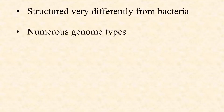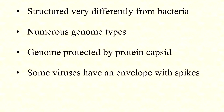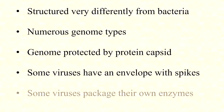Quick lesson summary: there's a very different structure between phage and human viruses. There are numerous genome types found in human viruses, whereas in phage it's almost always double-stranded DNA. In both cases the genome is protected by a protein capsid with variability. Some human viruses have envelopes with spikes — not seen among bacteriophage — and some viruses package their own enzymes. So there are important similarities and differences between phage and human viruses.